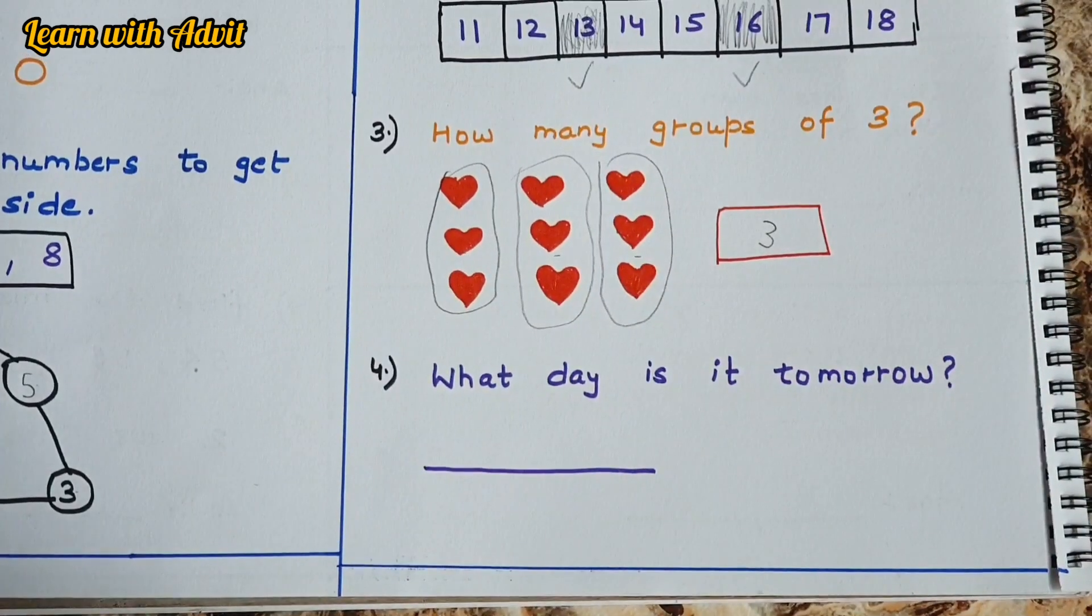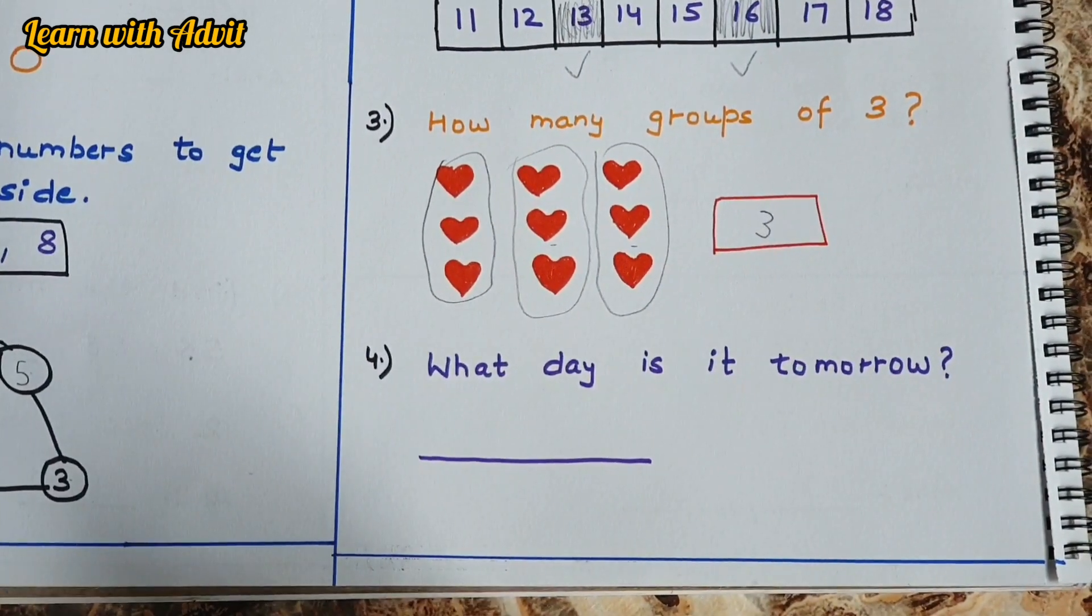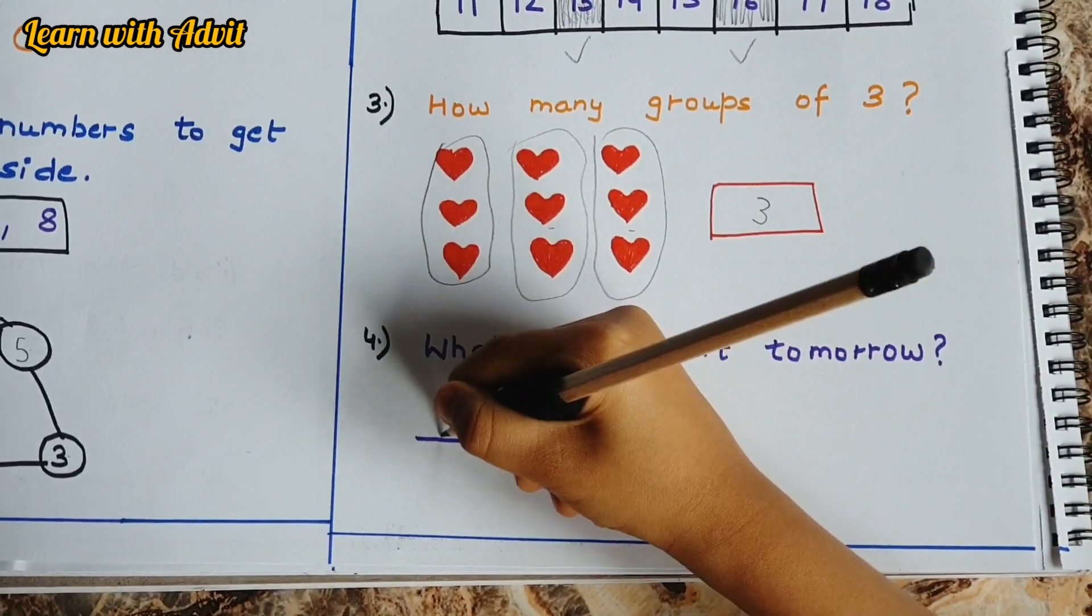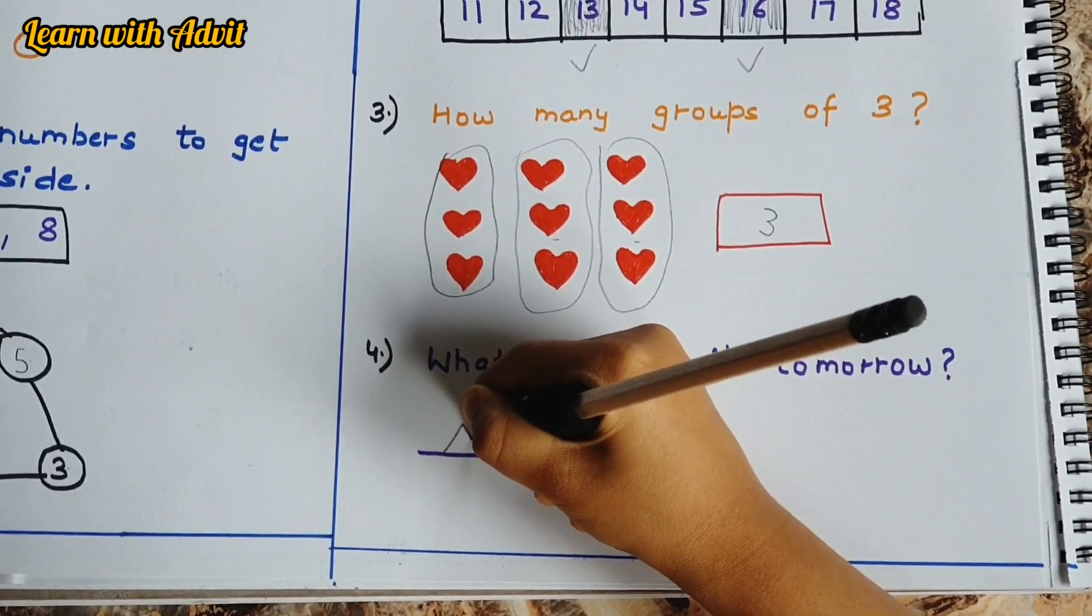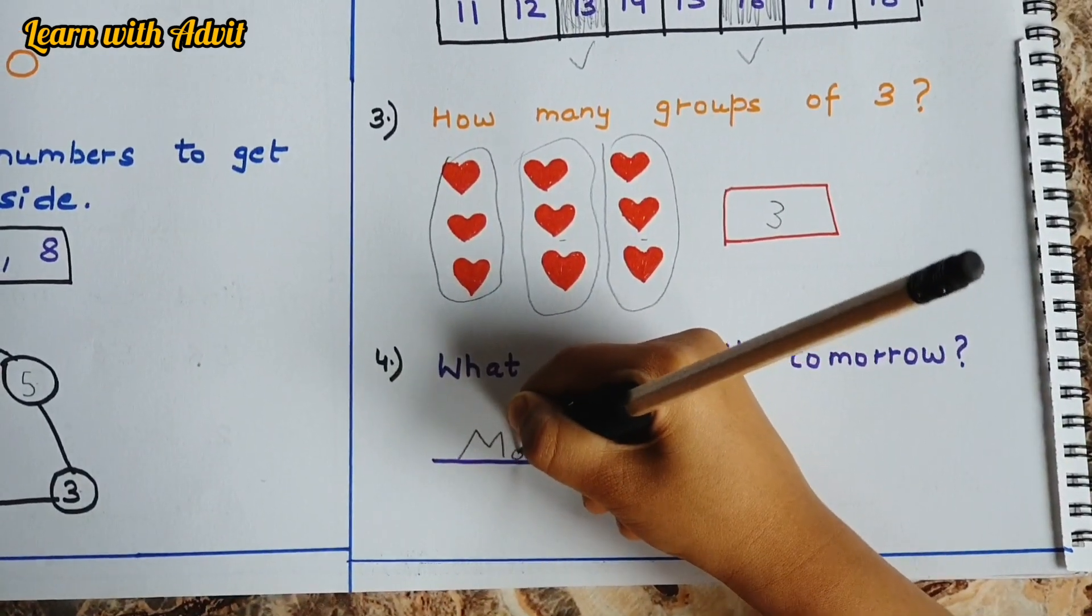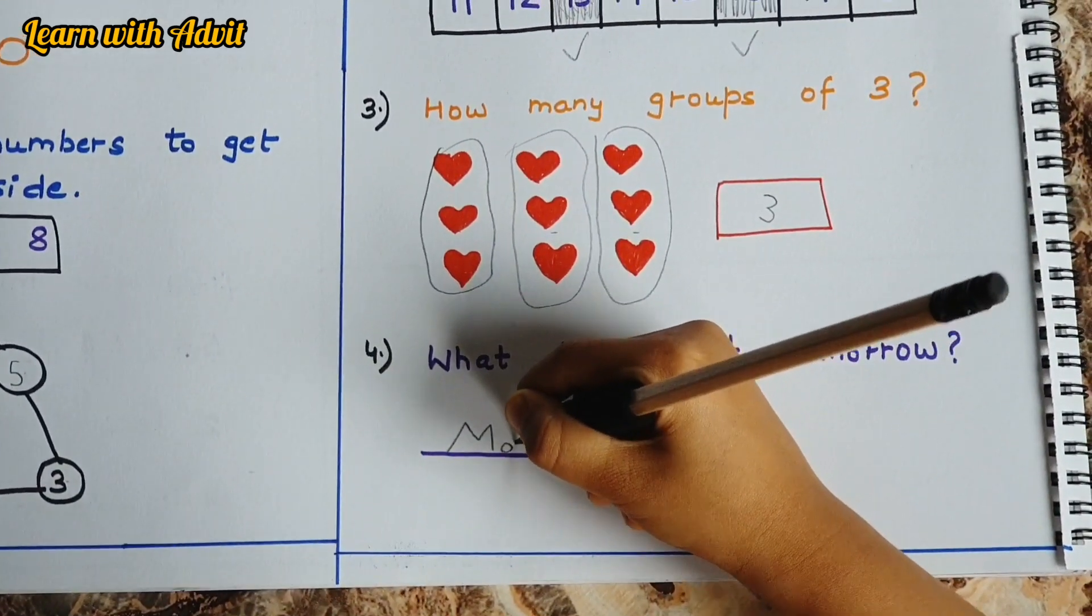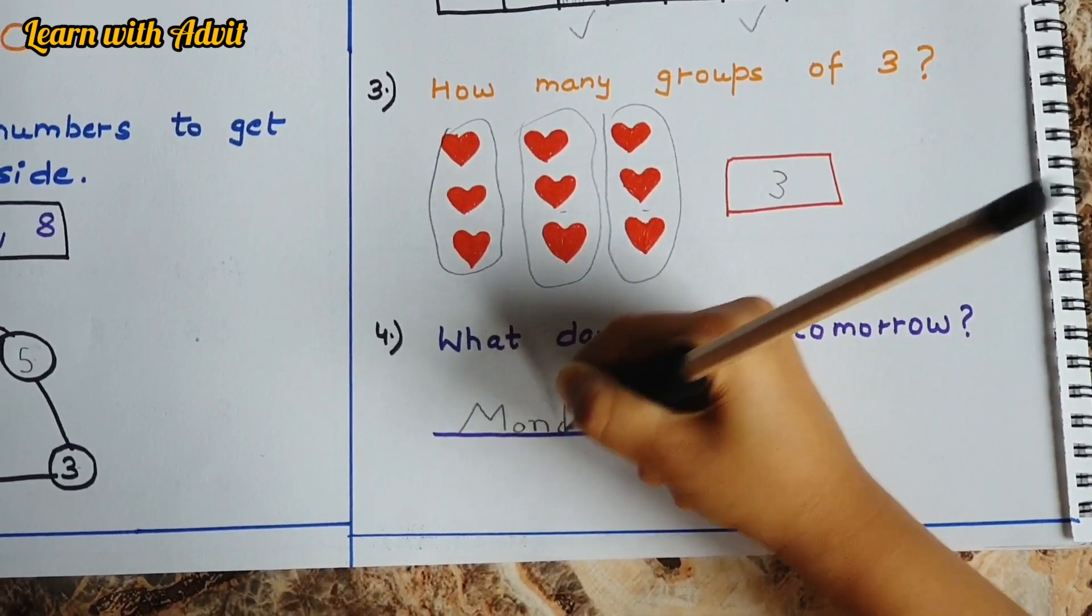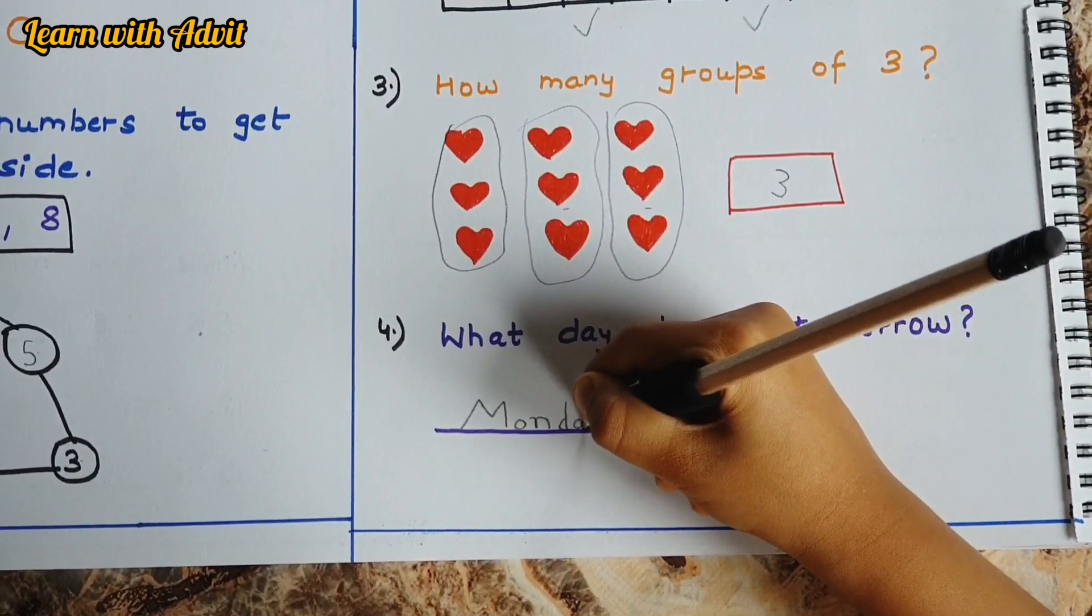What day is it tomorrow? Today is Sunday, and tomorrow will be Monday. Okay, spell and write. M-O-N-D-A-Y. Very good.